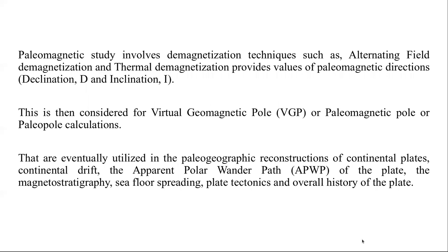Viscous remanent magnetization is imparted on magnetic grains by exposing the magnetic mineral to a magnetic field for a shorter interval of time. Paleomagnetic study involves demagnetizing techniques such as alternating field demagnetization, where the rock sample is exposed to a desired alternating field value, and thermal demagnetization, where the rock sample is exposed to heat. Understanding a sample's behavior under thermal demagnetization is important for determining paleomagnetic directions like declination and inclination.